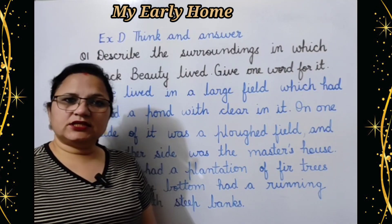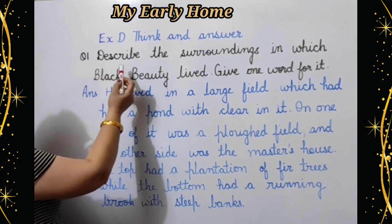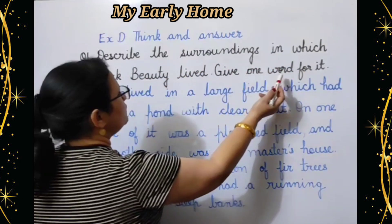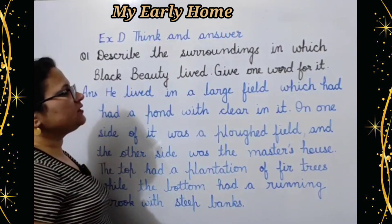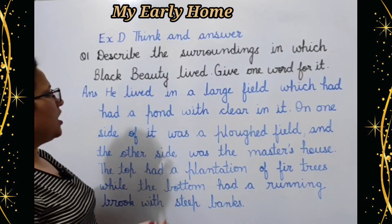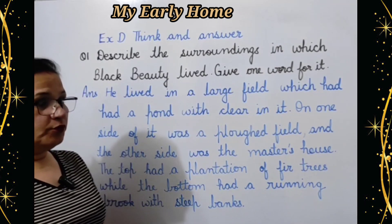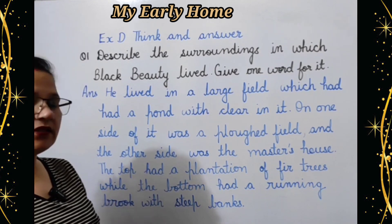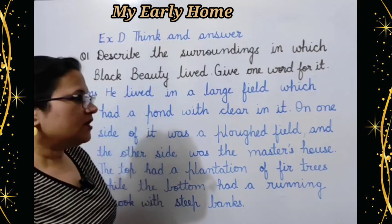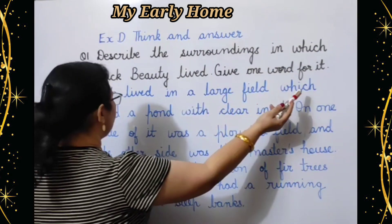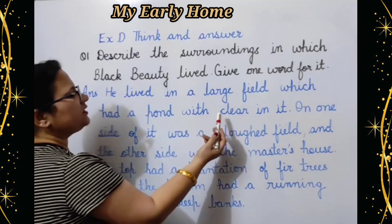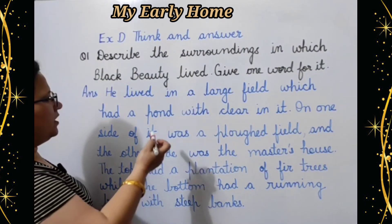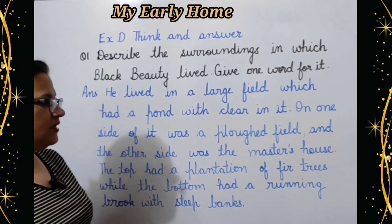Next we are going to do Exercise D — think and answer. Question one: Describe the surroundings in which Black Beauty lived. Give one word for it. Aapko us surroundings ka varnan karna hai jahaan per Black Beauty rahta tha — vahaan ke aspas ka watavaran kaisa tha? Answer: He lived in a large field which had a pond with clear water in it — bade se meydan mein jahaan per ek talab tha jis ka saaf paani tha.